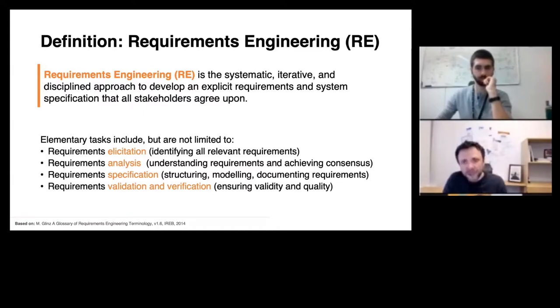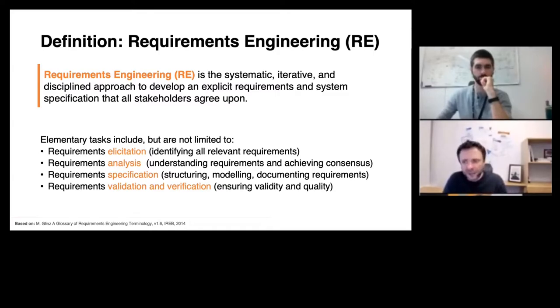The other thing you find is the term 'systematic and disciplined,' which means that requirements engineering should be something formulated in an explicit manner — that we do requirements engineering explicitly, having at least one specific approach in mind. As indicated earlier, there is no one way of doing requirements engineering. There are multiple ways, and how exactly you do this depends on many, many factors. We will be talking about these factors at the end of today's lecture.